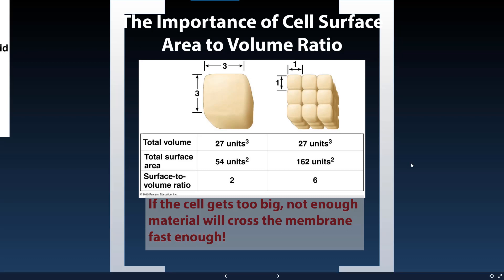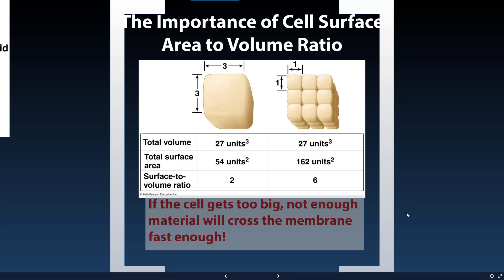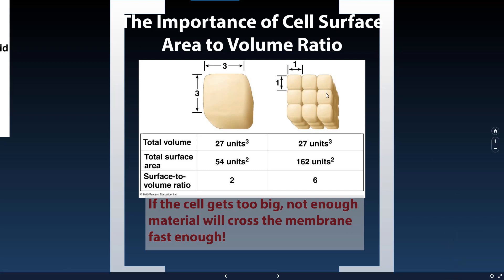I like to think of it like cooking a steak. A flat iron steak versus a petit filet mignon — the petit filet mignon takes longer to become well done because it's thicker; it takes longer for heat to get to the middle. So because of that, cells don't get too big. Otherwise, there wouldn't be enough oxygen and other materials getting through to allow the cell to function efficiently. That's why cells remain small.